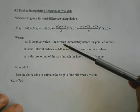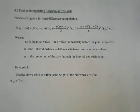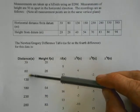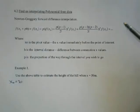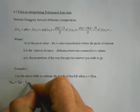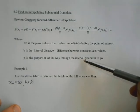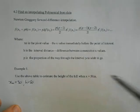h is the interval distance, so the distance between consecutive x values. So our x values are all 50 apart. So h is going to be 50.